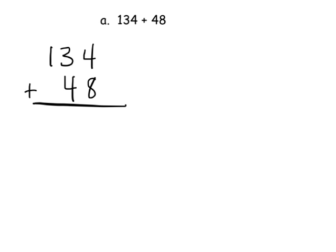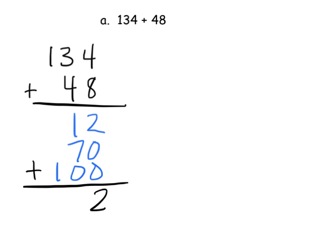Let's do the Totals Below method. So 8 and 4 is 12. 30 plus 40 is 70 — I did a little shortcut there, calling it 30 plus 40 instead of 3 tens plus 4 tens. And then 100 plus nothing is 100. Now we add, and we get 182. So that's one way we could do that.